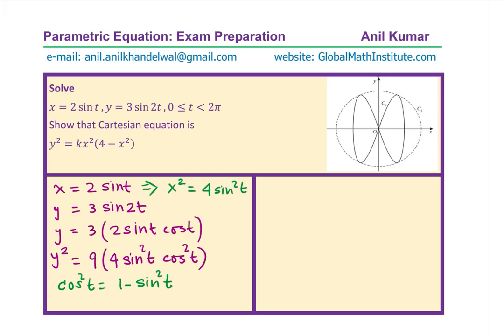These are the substitutions which I am going to do in the equation y² equals to 9, 4 sin² t cos² t. What do we get then? We get y² equals to 9 and 4 sin² t is equal to x². Cos² t can be now written as 1 minus sin² t.